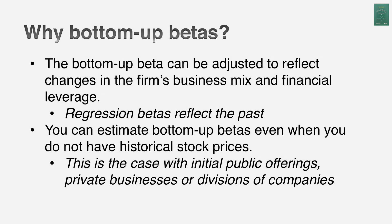That is the biggest selling point for bottom-up betas — because it's an average across many betas, it will be far more precise than any individual regression beta. Second advantage: if you entered the chemical business yesterday, a regression beta could never capture that risk, but with a bottom-up beta I can set the weights and even be proactive, bringing in businesses you plan to enter. And finally, I can estimate a bottom-up beta for a private business — I could never do a regression beta for a private business.